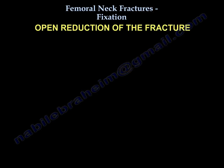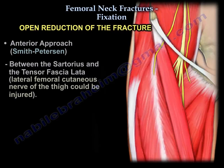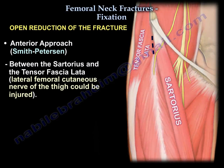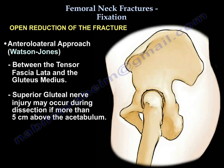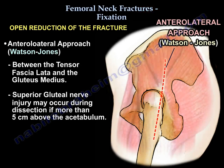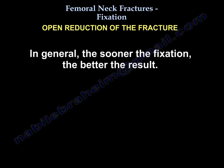Open reduction of the fracture can use a Smith-Petersen approach — the anterior approach between the sartorius and the tensor fasciae latae; the lateral cutaneous nerve of the thigh can be injured. Alternatively, use the Watson-Jones approach, between the tensor fasciae latae and the gluteus medius — the superior gluteal nerve may be injured if dissection is more than 5 cm above the acetabulum. In general, the sooner the fixation, the better the result.